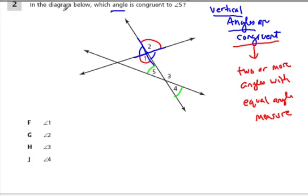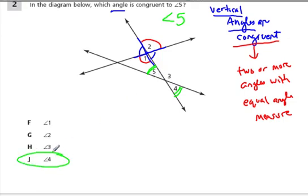They ask in the diagram below which angle is congruent to angle five. Well, we just said that the other green angle, four, is congruent to five because they're vertical angles. So I would say four — four is congruent to five.